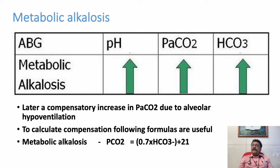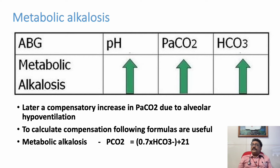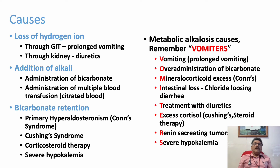If the measured CO2 is more than the expected range from that calculation, we must consider an additional type 2 respiratory failure—that is, respiratory acidosis. If the expected CO2 correction is less than what is calculated, then there is some other problem producing more alkalosis, such as an additional respiratory alkalosis.